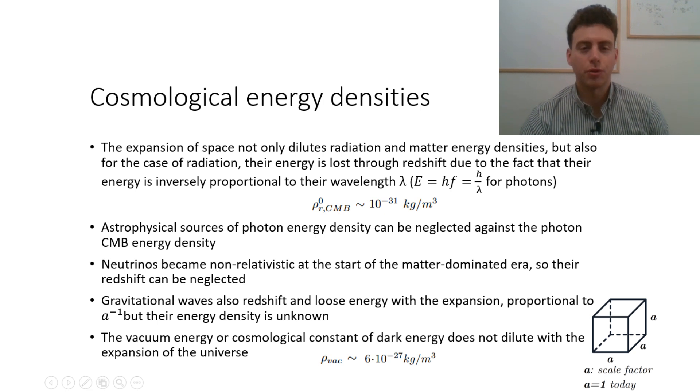Astrophysical sources of photon energy density such as stars and dust emission can be neglected against the photon CMB energy density because their number and energy are estimated to be at least two and one order of magnitude smaller respectively. Neutrinos became non-relativistic at the start of the matter dominated era so the redshift can be neglected against the one from the CMB.